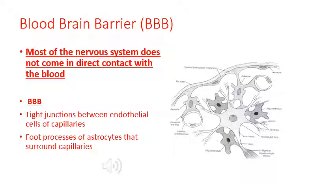Despite all this blood supply, most of the nervous system does not come into direct contact with the blood — it's separated by the blood-brain barrier. The blood-brain barrier is composed of tight endothelial cells forming the walls of the capillaries, with astrocytes further separating the neurons from the blood vessels.